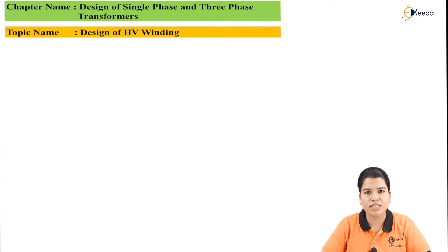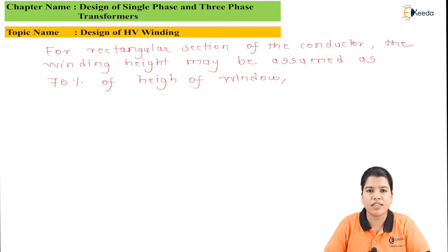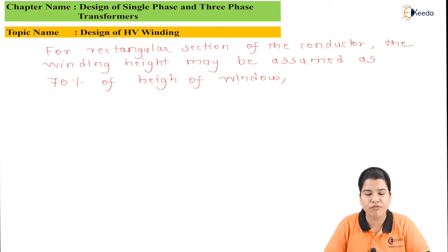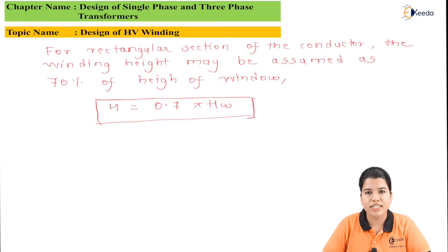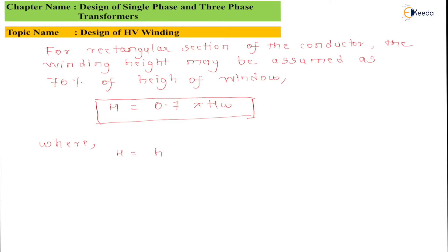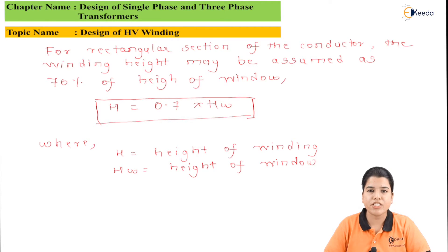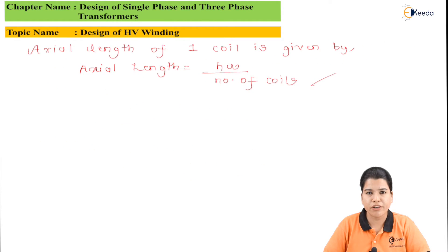If the selected conductor section is of rectangular type, it is assumed that the height of the winding should equal 70% of the height of the window. Hence: H equals 0.7 multiplied by HW, where H is the height of the winding and HW is the height of the window. The axial length of the conductor is then calculated as axial length equals HW divided by the number of coils.